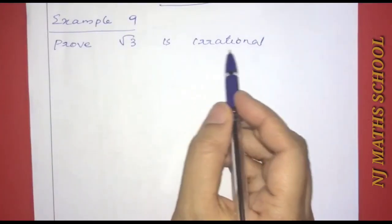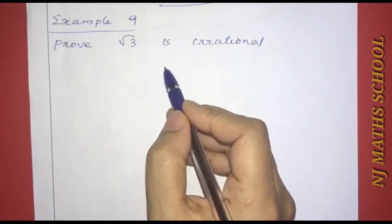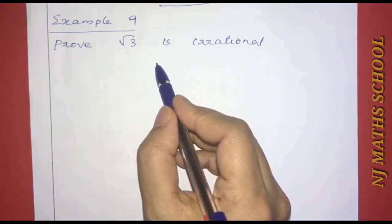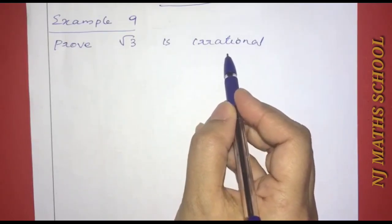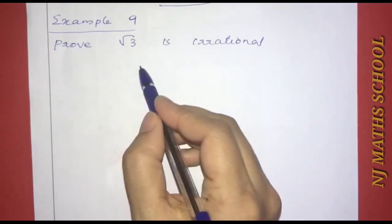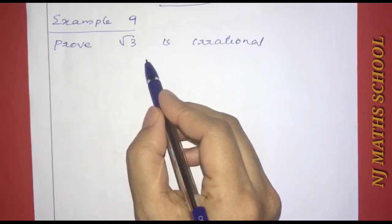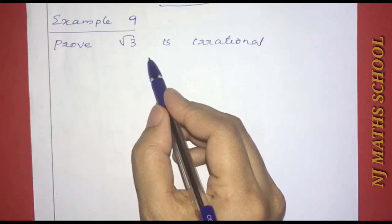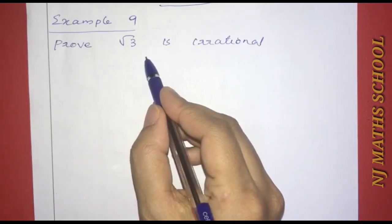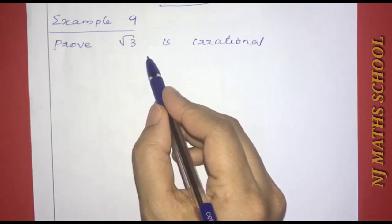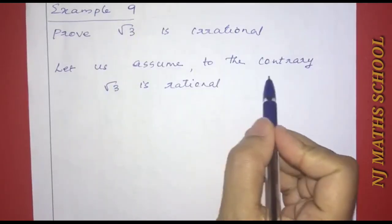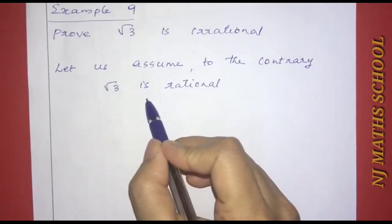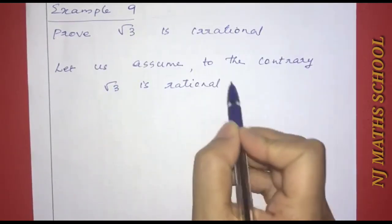To prove that root 3 is irrational — similar to how we can prove root 2 is irrational — we will prove root 3. First, we will try to prove that root 3 is irrational. Let us assume to the contrary that root 3 is rational.